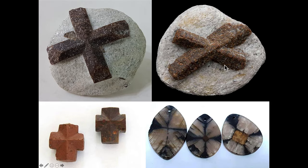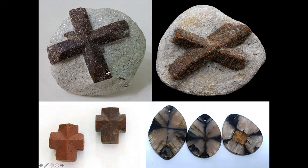Here are some examples of staurolite crystals. These are twinned crystals — one staurolite crystal growing through another staurolite crystal. This can occur at two angles most commonly: 90 degrees and 120 degrees. Here we have examples where the staurolite crystals have been isolated from the matrix — this whitish-grayish material. If you take away the matrix, you end up with these crystals. You can polish them and do all kinds of gemstone-like things to them. So very distinctive, very common, very indicative of metamorphism.